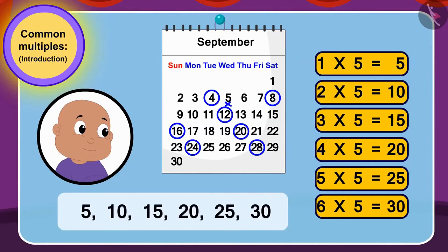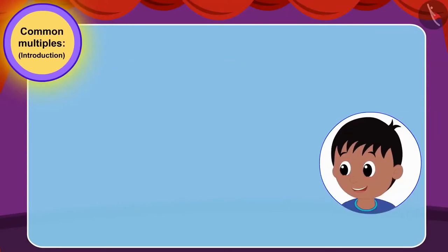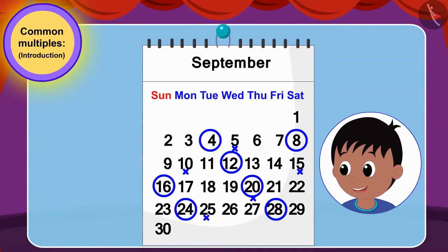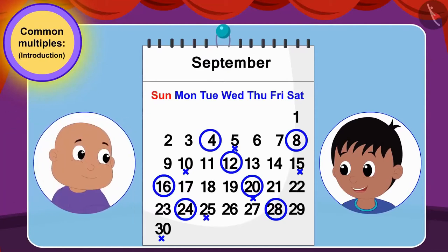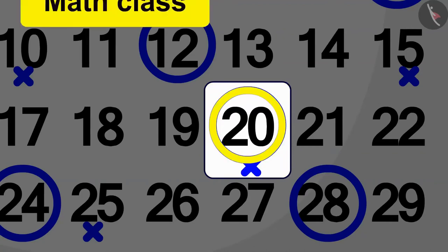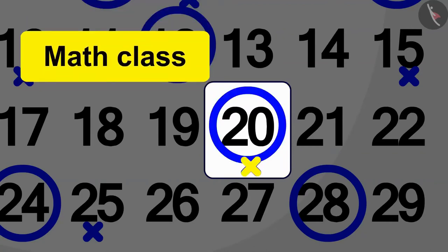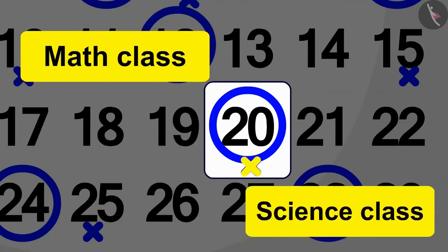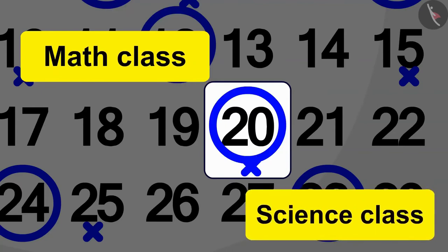We can find multiples of five by using tables of five. Bablu will go to science class on 5, 10, 15, 20, 25 and 30 dates. Raju excitedly made a mark on the calendar on the dates on which Bablu will go to science class. When Raju and Bablu looked closely at the calendar, they found that on the 20th, Bablu made the circle of math class and Raju also made a mark for science class.